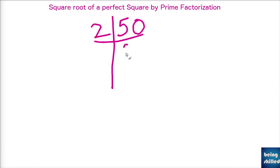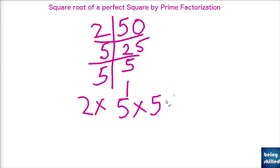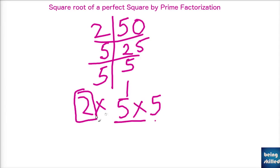First, factorize 50: we get 2 × 5 × 5. When calculating a square root, the factors must come in pairs. Here, five has a pair (5 × 5), but two does not have a pair. So 50 is not a perfect square. We need a number that is a perfect square to find its square root.